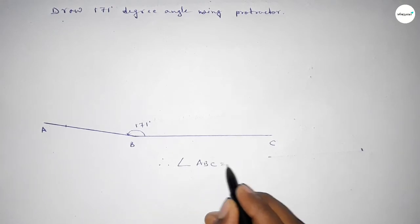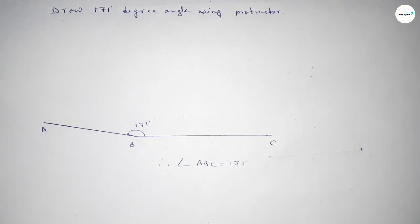Therefore, angle ABC equals 171 degrees. That's all. Thanks for watching, please share it with your friends.